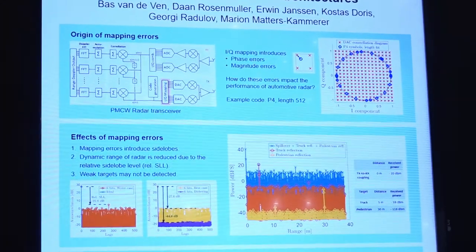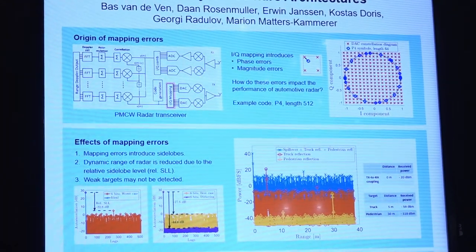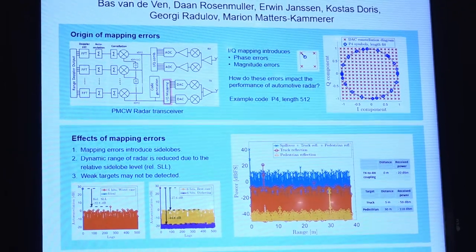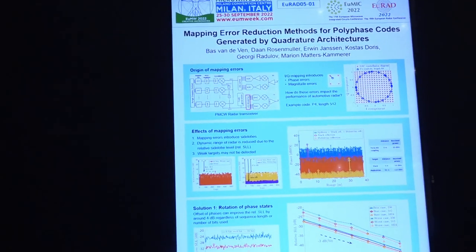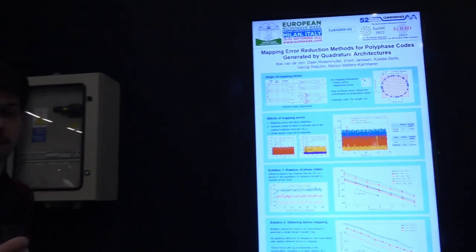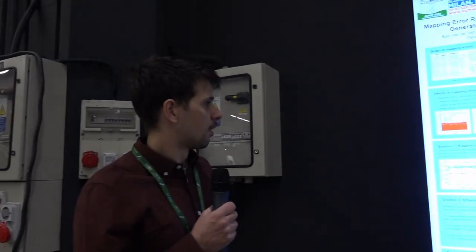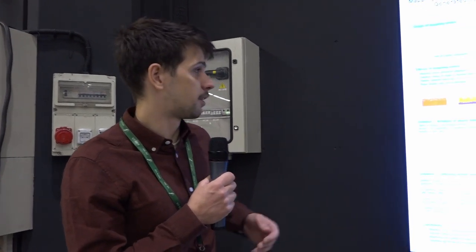If you rotate the initial states, then the resulting transmitted phase states will be slightly different and also have slightly different mapping errors. There's some rotation angle where the resulting side level is optimal, and it can be shown that this improvement is around 40 dB, regardless of the number of bits of the DACs or code lengths.